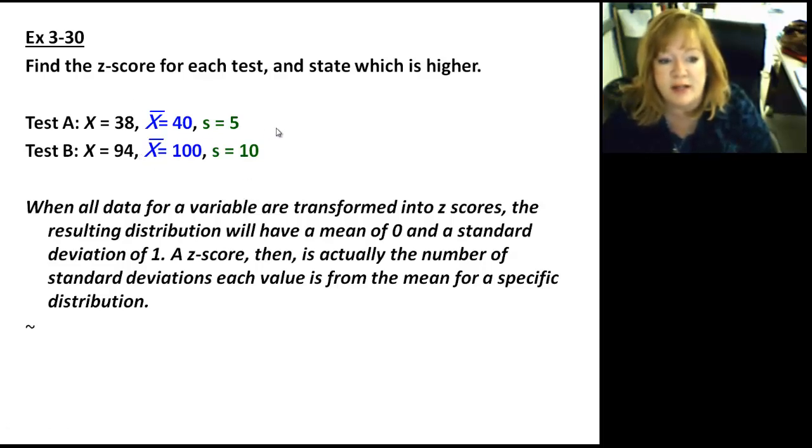When all data for a variable are transformed into z-scores, the resulting distribution will have a mean of zero and a standard deviation of one. A z-score then is actually the number of standard deviations each value is from the mean, for a specific distribution.